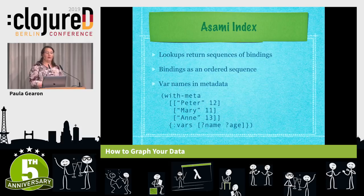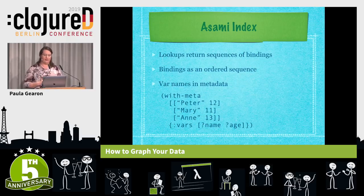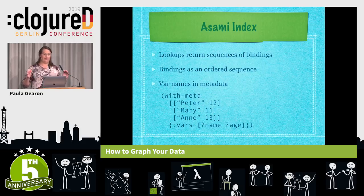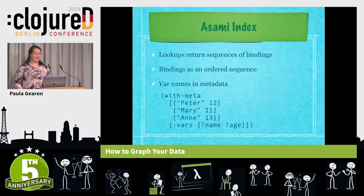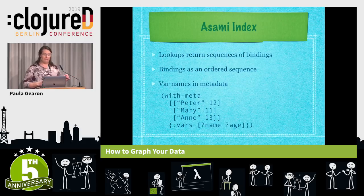Patterns in a query result in lookups in indices. These lookups return a sequence of things that the variables matched on, as a sequence of bindings for that variable. Each binding is a vector containing the values for each variable in order, and then some metadata is added to the final sequence containing the names of the variables in the same order. At the bottom here you can see we've got an example of a binding containing the variables name and age. You can see the metadata at the bottom, and the bindings — we've got three different bindings, with the first of each being the name and the second being the age.